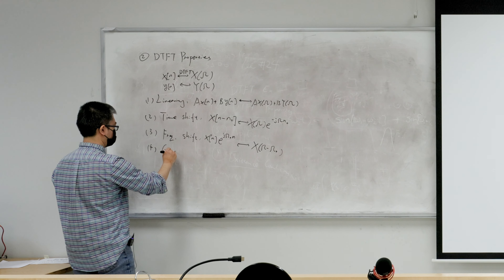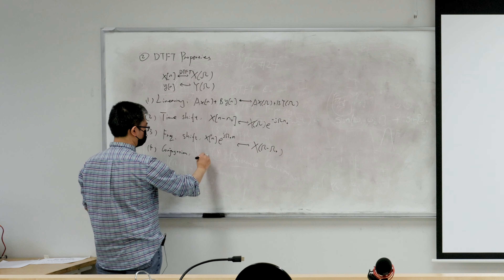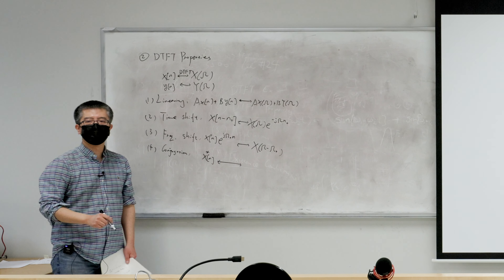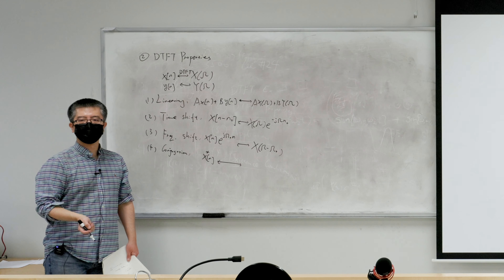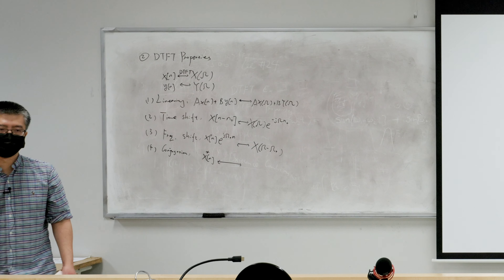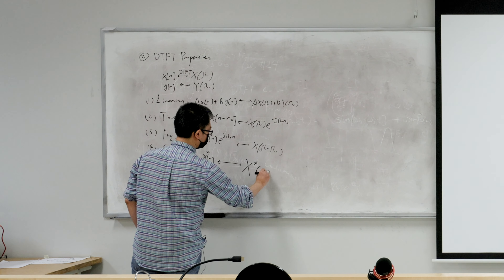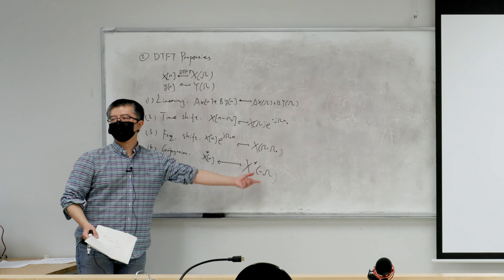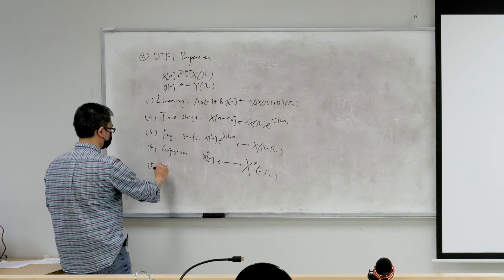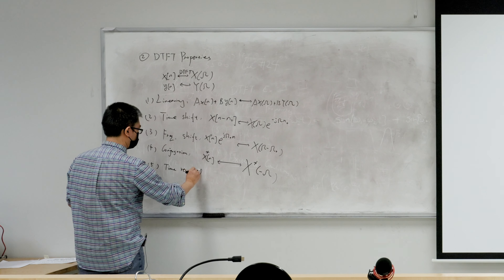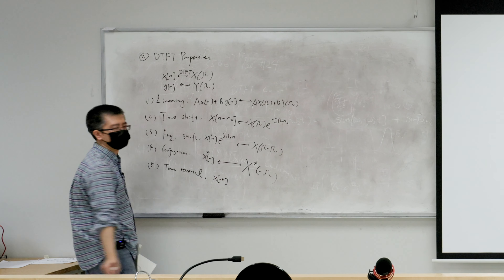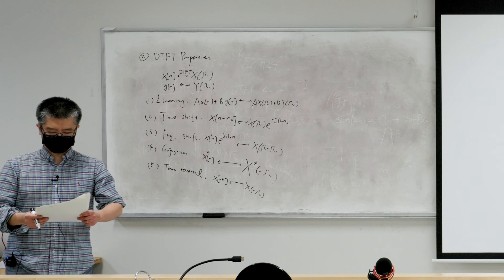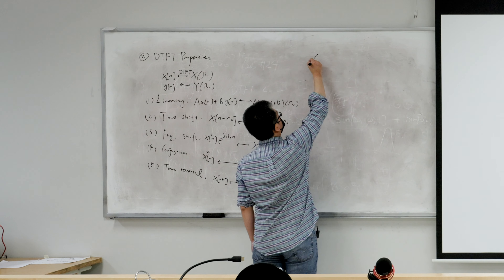Fourth: conjugation. If we take the conjugate in the time domain, in the frequency domain we get a minus sign in front of omega and then conjugate. Fifth: time reversal — if we do a time reversal, the frequency domain undergoes the same procedure. So far, there's no difference compared to CTFT.